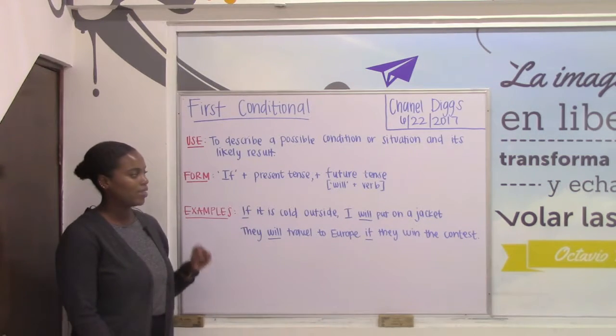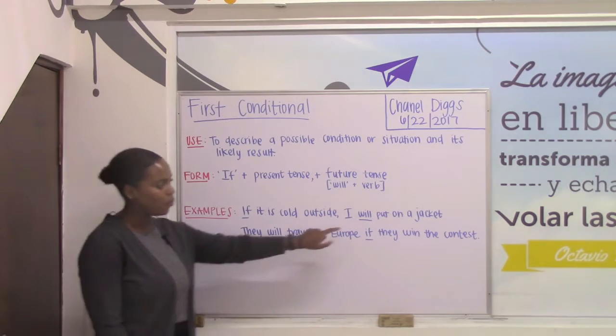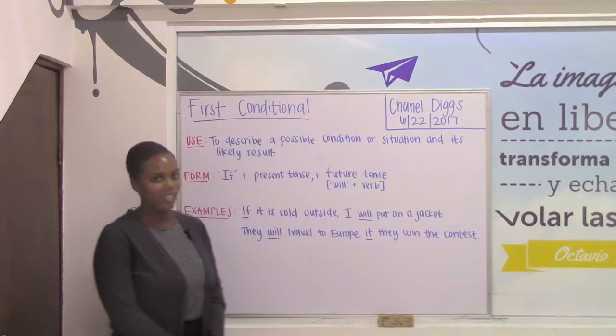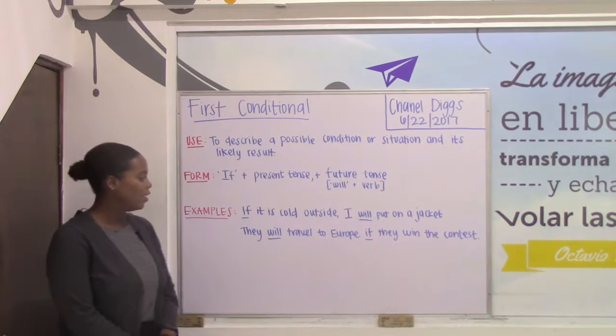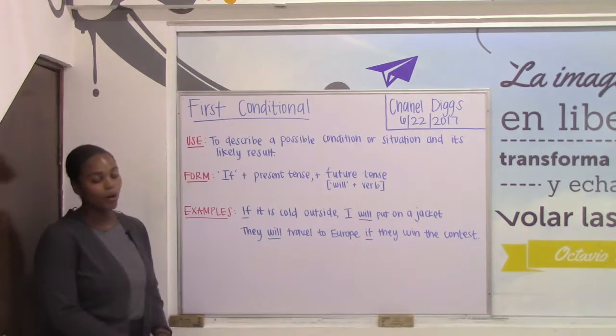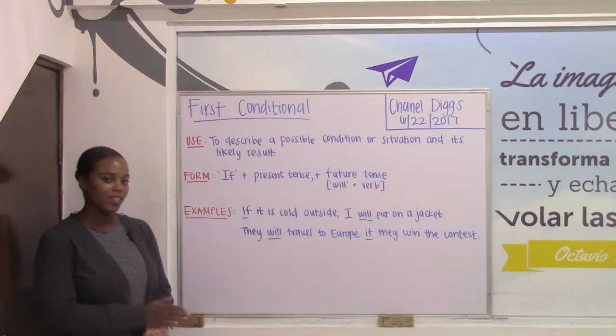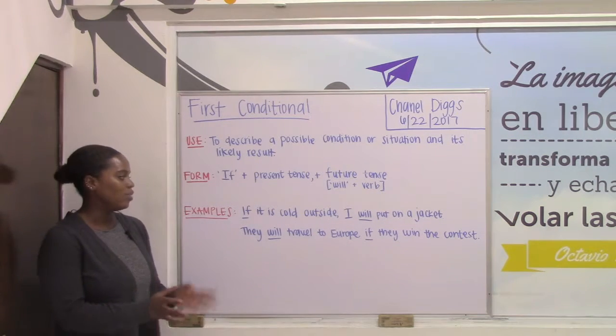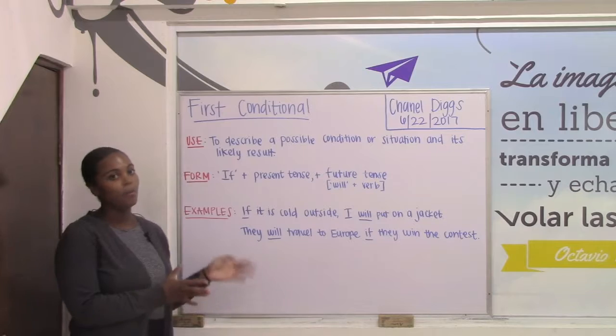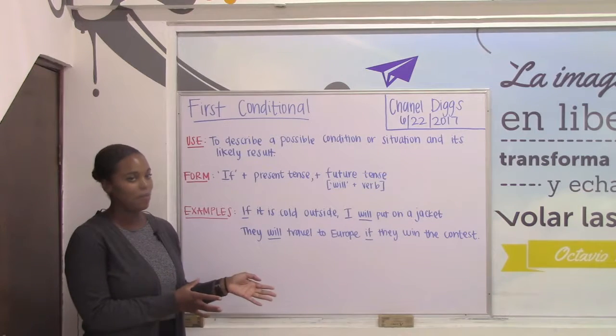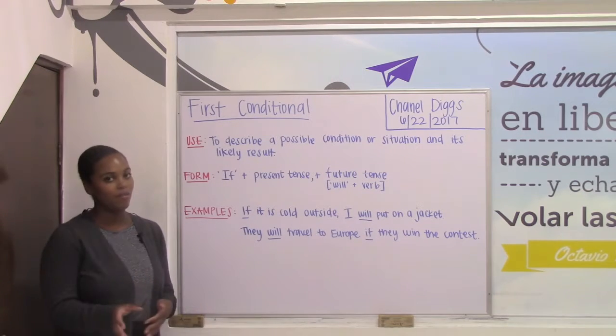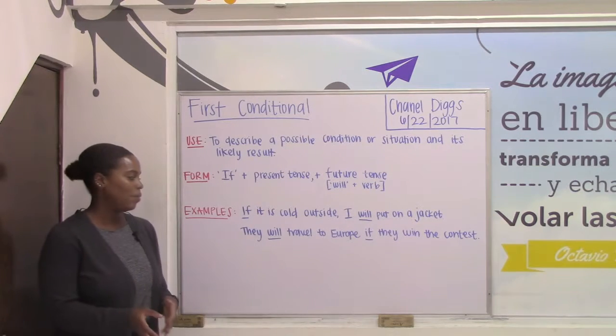For example, if it is cold outside, I will put a jacket on. You can also flip the sentence around — we can use 'will' in the beginning statement and use 'if' in the second statement.